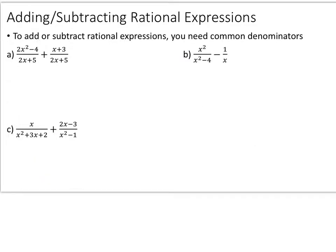Now we're going to talk about adding or subtracting rational expressions. Just like when you add or subtract fractions with just numbers, you need a common denominator. Before we do the first example, do 2 fifths plus 1 fifth — go ahead and pause the video and simplify that. These already have a common denominator of 5, so the answer has that same common denominator and we just add the numerators across: 2 plus 1, giving us 3 over 5.